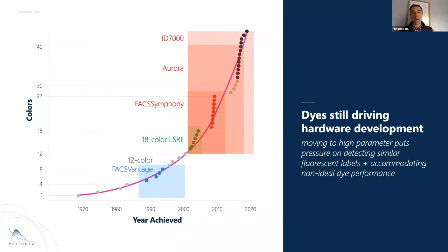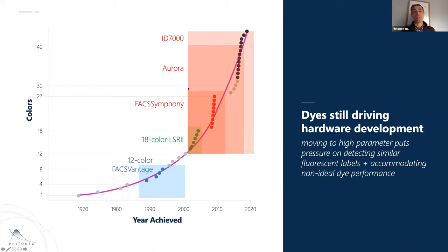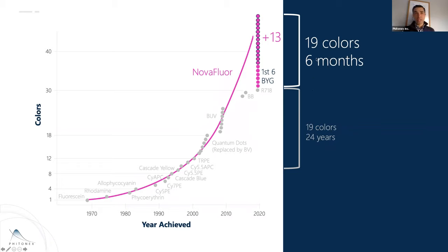The development of the first PE tandems drove the 12-color FACSCalibur, then quantum dots drove the 18-color LSR2, then brilliant dyes drove the FACSymphony. As dye development trailed off over the past decade, we got the innovations brought to us by spectral cytometry — a downward pressure from wanting to answer more questions per cell. In 2020, we released 19 labels in 17 unique colors — truly new fluorophores, not rebranded dyes or Alexa copies, purely new dyes shown to work in flow cytometry.